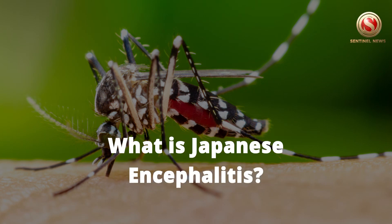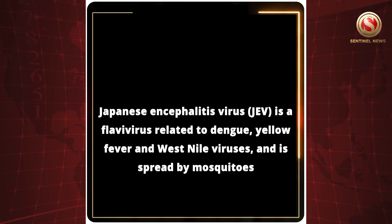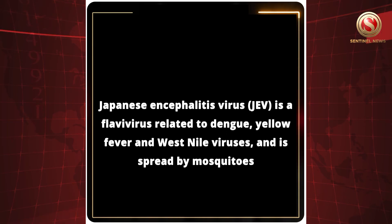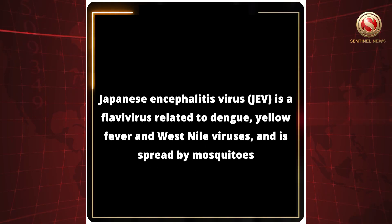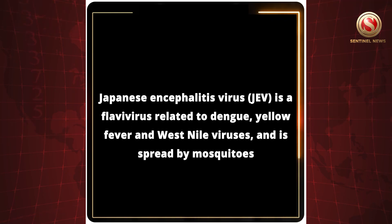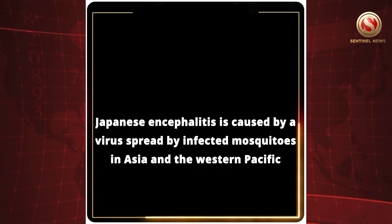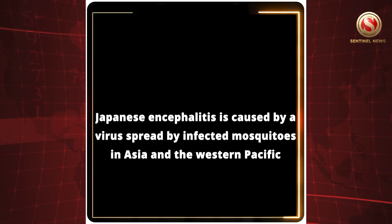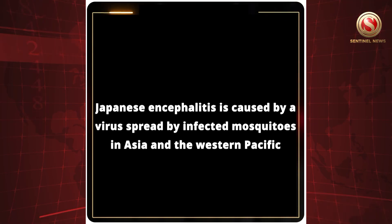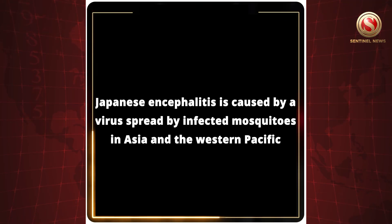Japanese Encephalitis — what is it? Japanese Encephalitis virus is a flavivirus related to dengue, yellow fever and West Nile viruses, and is spread by mosquitoes. Japanese Encephalitis is caused by a virus spread by infected mosquitoes in Asia and the Western Pacific.